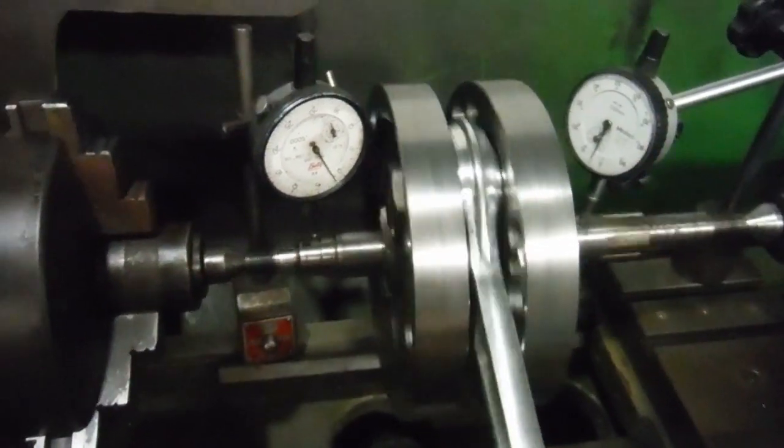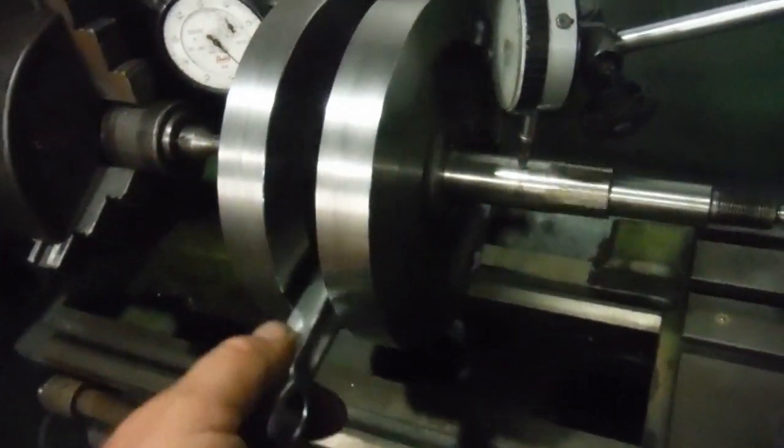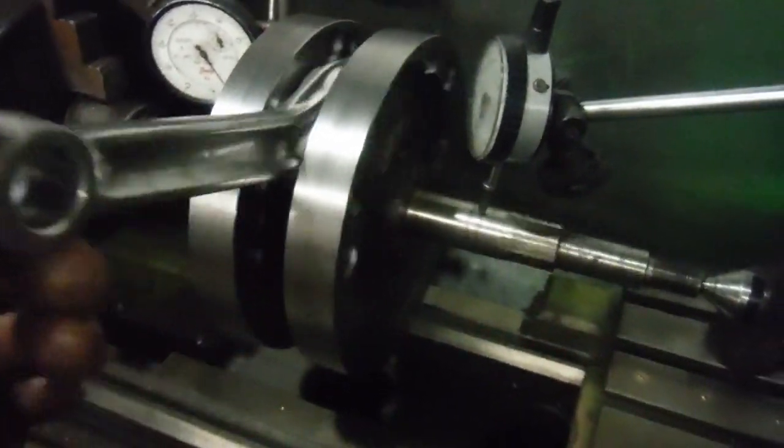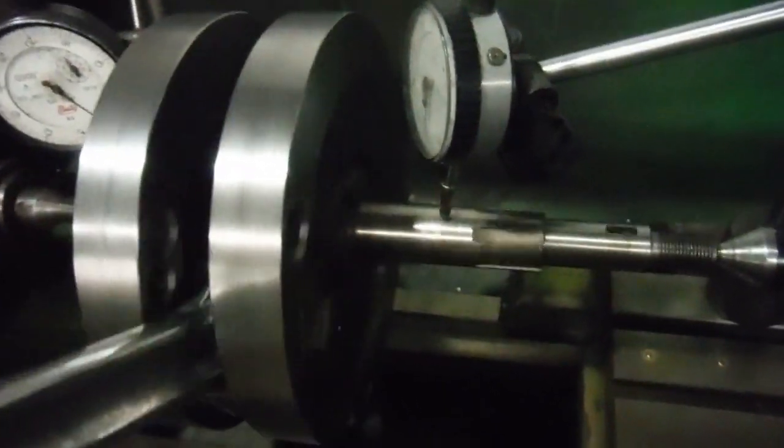With two thousandths of an inch there and not even three thousandths of an inch there, the maximum run-out we've got is one thousandth of an inch. So I'm more than happy with that. That will run nice and smoothly and freely, and the main bearings will have as easy a life as they possibly can.